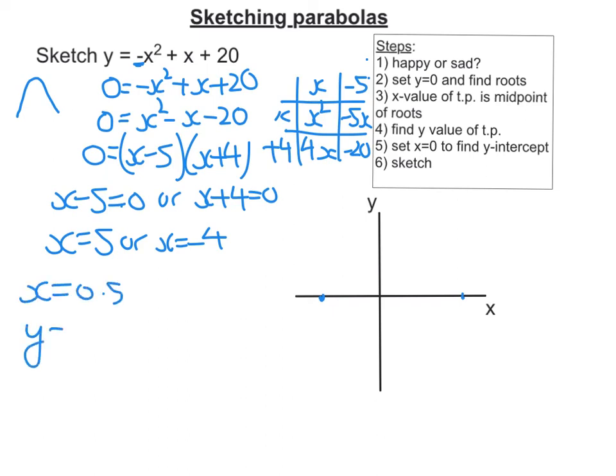Sub that into my equation to find out what the y value is. So negative 0.5 squared plus 0.5 plus 20. If I put that into my calculator, you get 20.25. So my turning point is about here, and it's 0.5, 20.25.